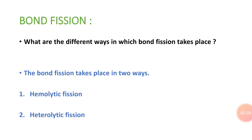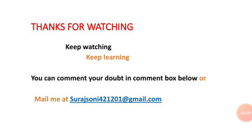Let's see what are the different ways in which bond fission takes place. Bond fission takes place in two ways: first is homolytic bond fission and second is heterolytic bond fission. In this session we've covered up to here; in the next session I will discuss what is homolytic bond fission in detail.